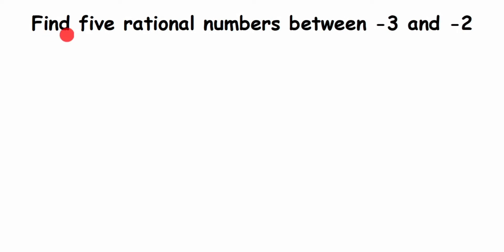Hey everyone, here is a question from rational numbers and these questions are really important for exams. This type of question can have anything in place of minus 3 and minus 2, but the method remains the same. So let's read the question: find 5 rational numbers between minus 3 and minus 2. They may ask for 5 or 10 rational numbers — it's completely up to the examiner.